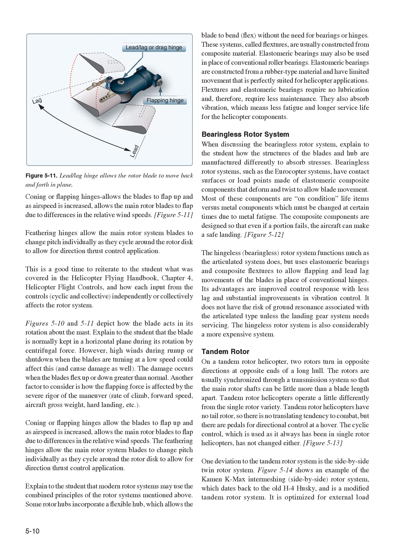When discussing the bearingless rotor system, explain to the student how the structures of the blades and hub are manufactured differently to absorb stresses. Bearingless rotor systems, such as the Eurocopter systems, have contact surfaces or load points made of elastomeric composite components that deform and twist to allow blade movement. Most of these components are on-condition life items versus metal components which must be changed at certain times due to metal fatigue. The composite components are designed so that even if a portion fails, the aircraft can make a safe landing. The hingeless, bearingless rotor system functions much as the articulated system does, but uses elastomeric bearings and composite flexures to allow flapping and lead-lag movements of the blades in place of conventional hinges. Its advantages are improved control response with less lag and substantial improvements in vibration control. It does not have the risk of ground resonance associated with the articulated type unless the landing gear system needs servicing.